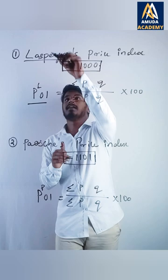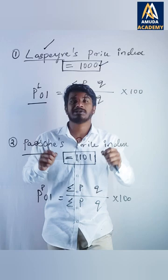Struggling to remember price index number formulas? From now onwards you will never forget them. You just need to remember that Laspeyre's is equal to 1000 and Paasche's is equal to 1101.